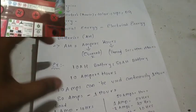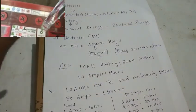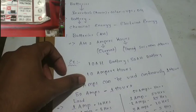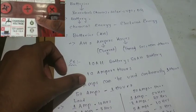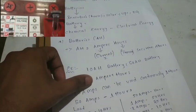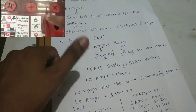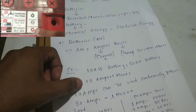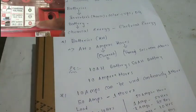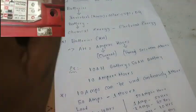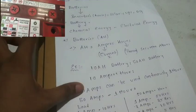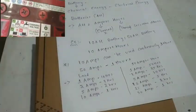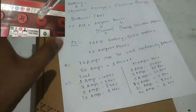This is the test. I will check out the battery in this video. It has 10 amps capacity, so you can use 10 amps. If you use it directly at 10 amps, that is 1 hour. If it is 5 amps, it is 2 hours. If it is 2 amps, it is 5 hours. If it is 1 amp, it is 10 hours.